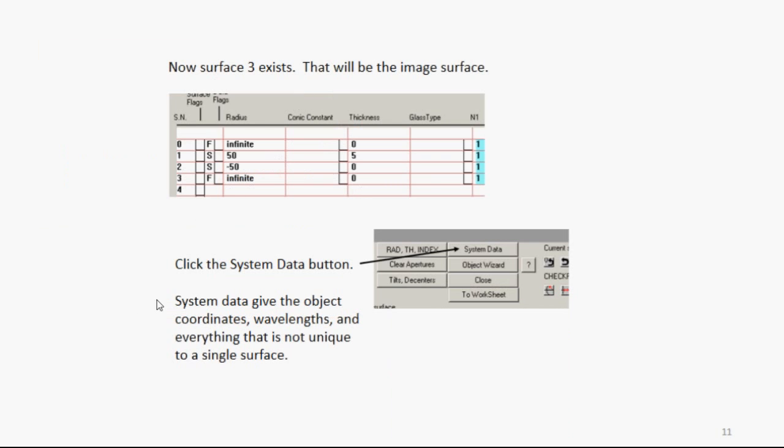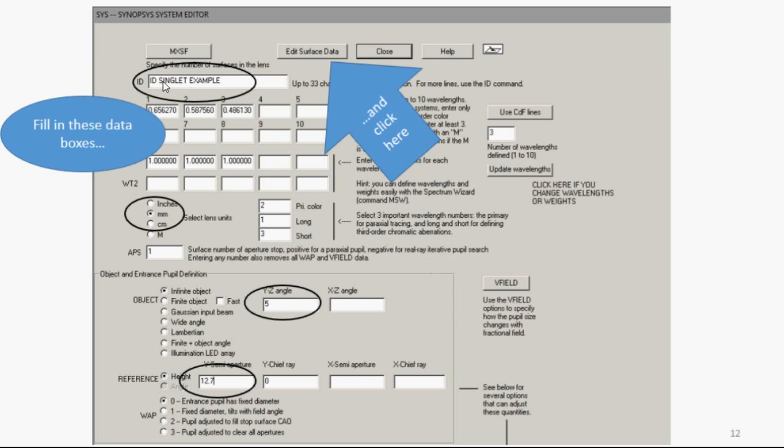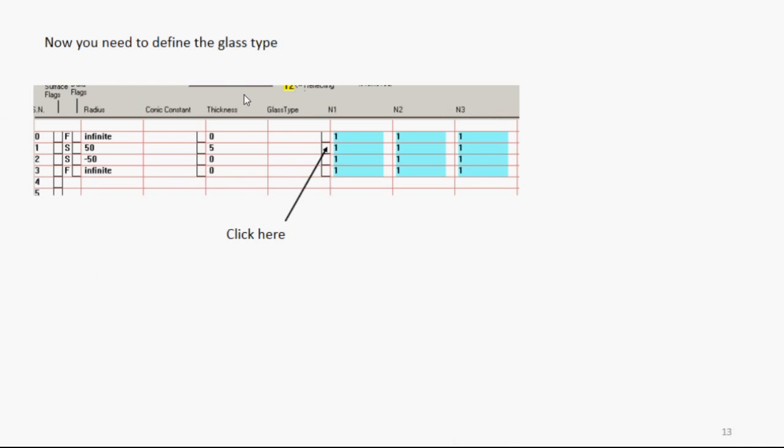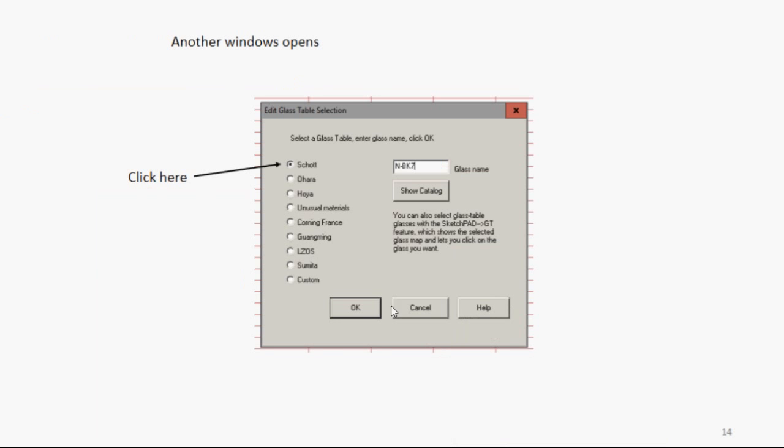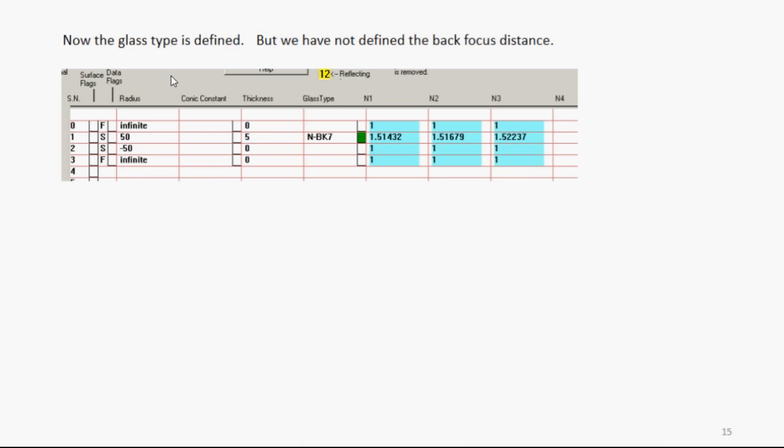We have to define the system data now, so click the system data button. You can give it an identification, select millimeters, give it the semi-field angle and semi-aperture, and then click the edit surface data button. Now you need to define the glass type. So you click here on surface 1, another window opens, you can click the glass table, select the Schott catalog, enter the glass name, click OK, and then close. Now the glass is defined.